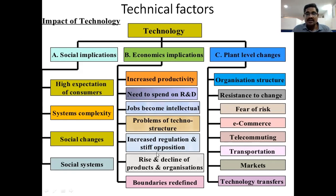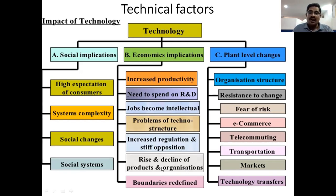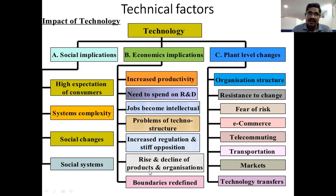Next, increased regulations under stiff oppositions. Next, rise and decline of the products under the organization. Rise means increase, decline means decrease. So, increase or decrease in the sales, increase or decrease in the profits, increase or decrease in the products and data — the designs under all augmented products from the organization. We need to improve the business operations and their performance towards this point.